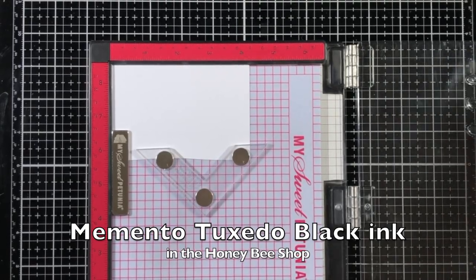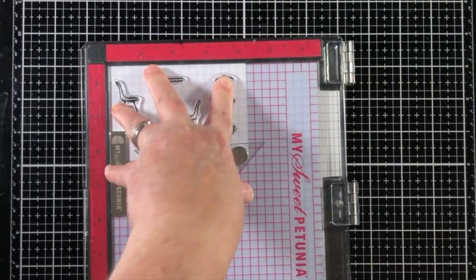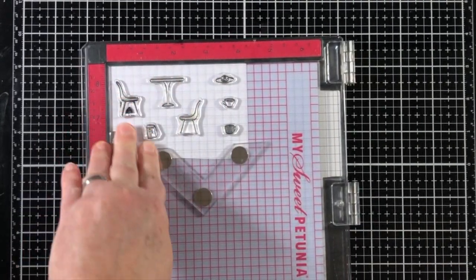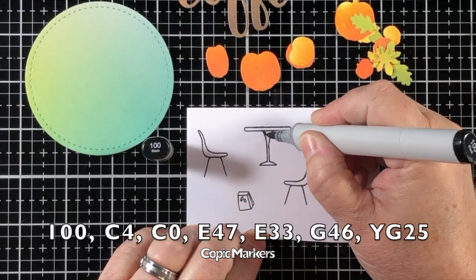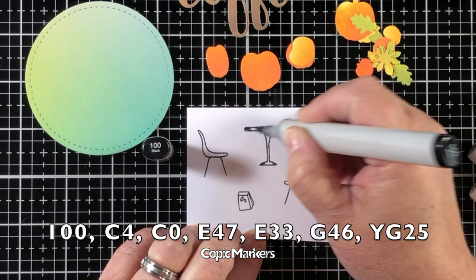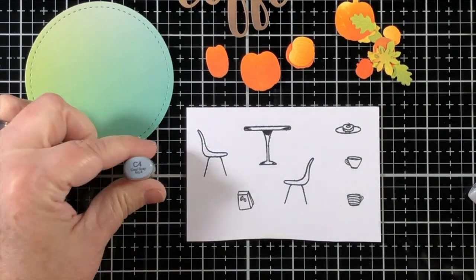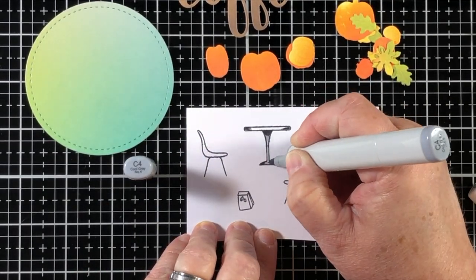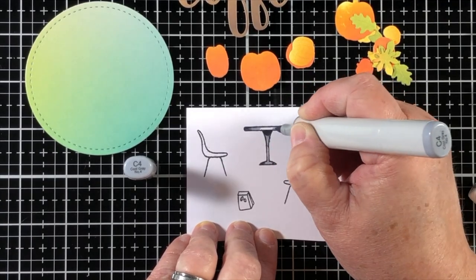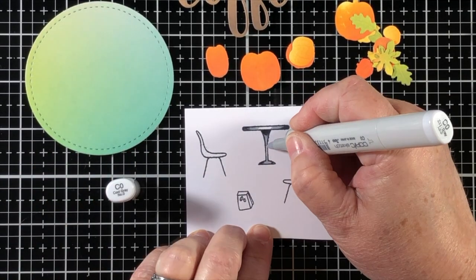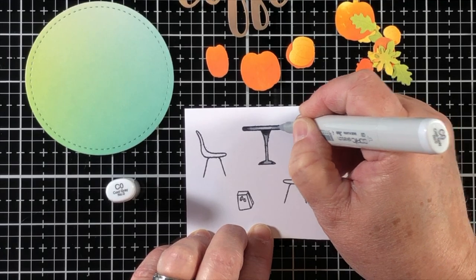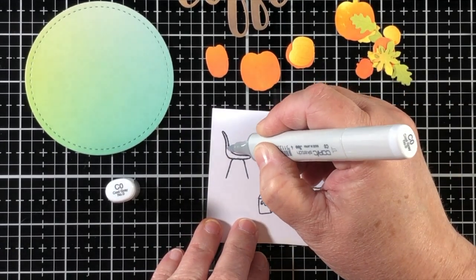I'm going to stamp with memento tuxedo black onto some more 110 pound cardstock and use some copic markers to add just a little hint of coloring. The circle die you see in the left corner is going to be the background for what would be a coffee shop area.